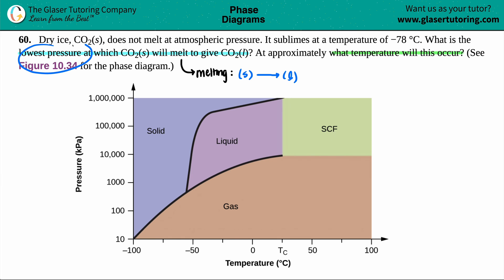The solid is the deep blue and the liquid is purple. We want that lowest pressure. Remember, pressure on phase diagrams is the y-axis, so we're looking for the lowest possible value. This line here is the boundary between solid and liquid.